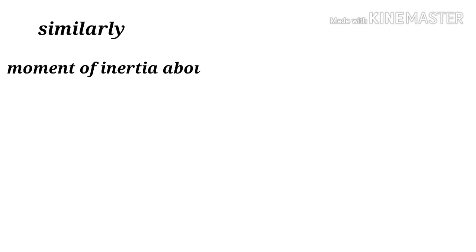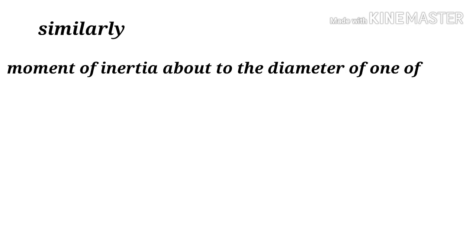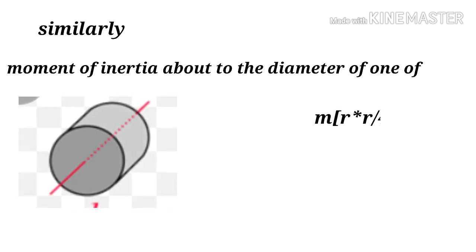Similarly, the moment of inertia about each diameter: m is the mass per unit length, r is the radius, and l is the length of the cylinder. The moment of inertia is M r squared by 4 plus l squared by 3.